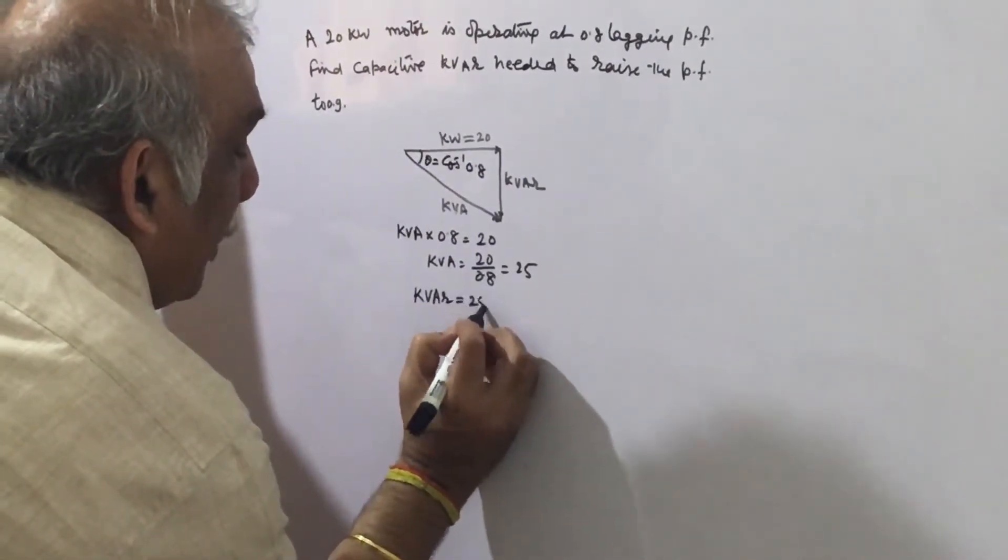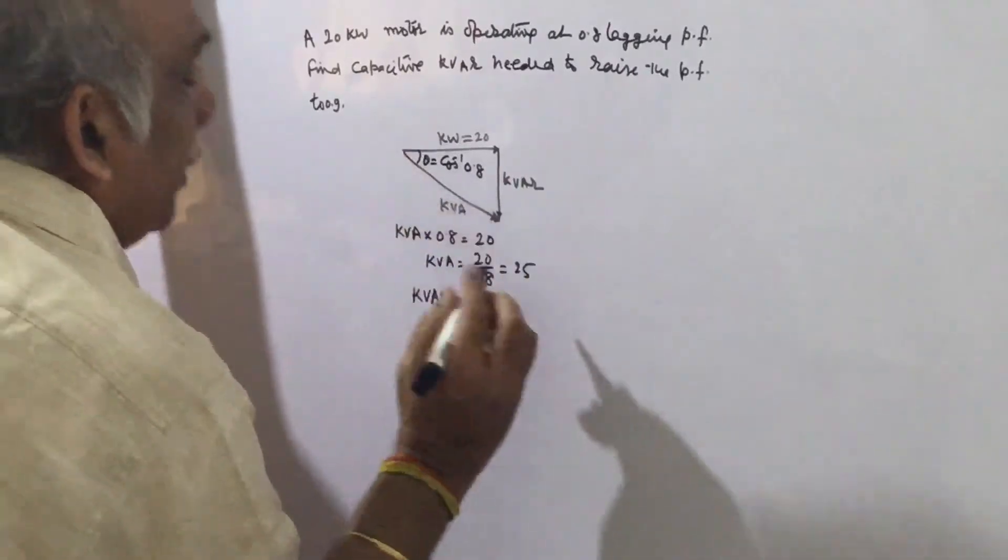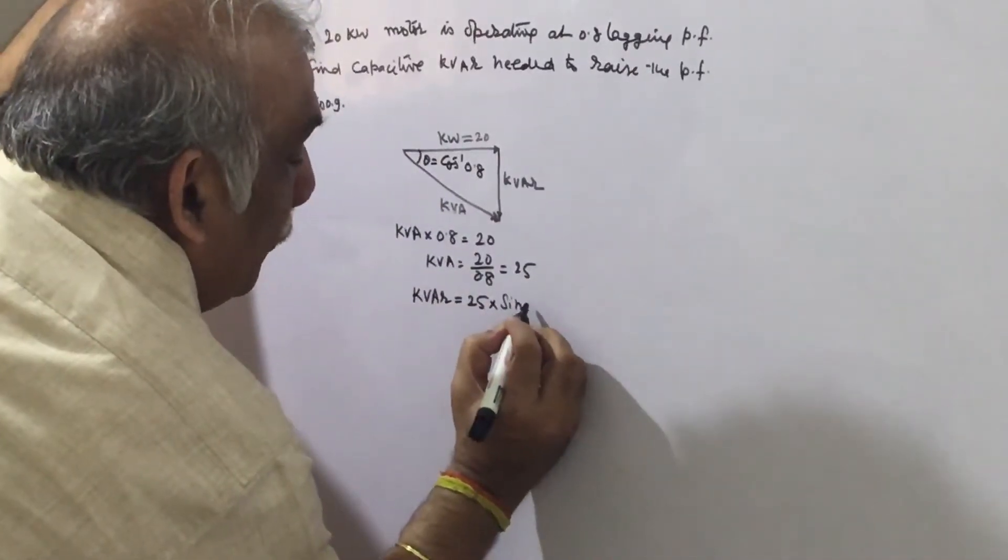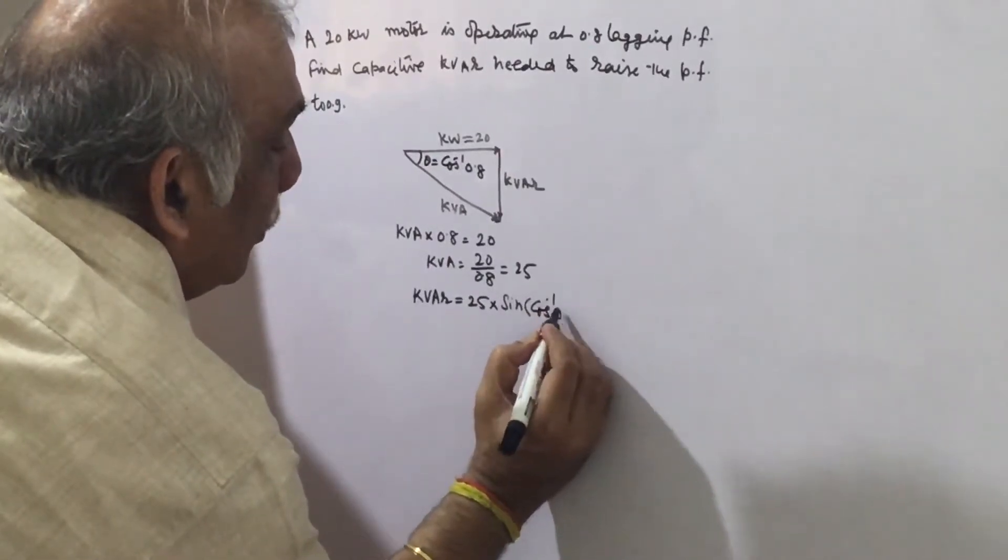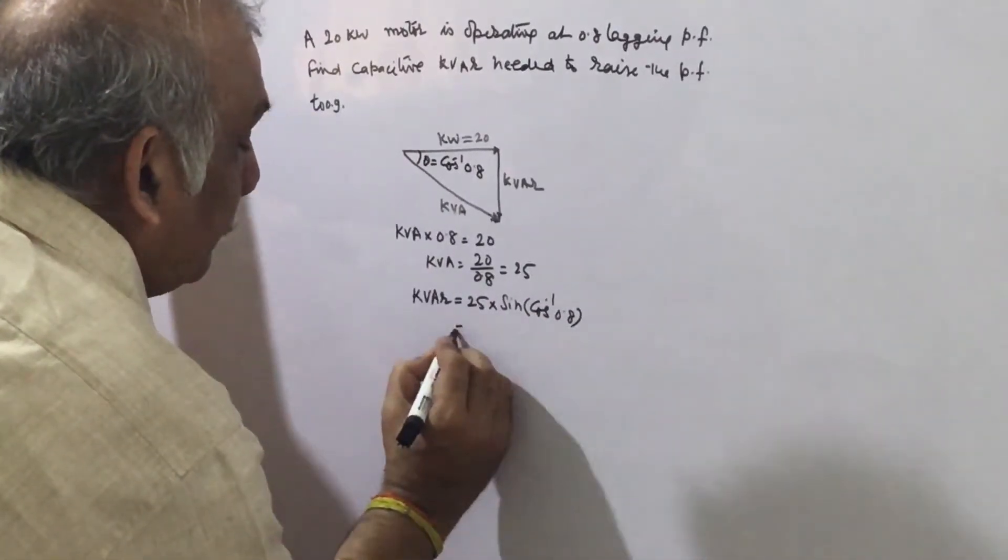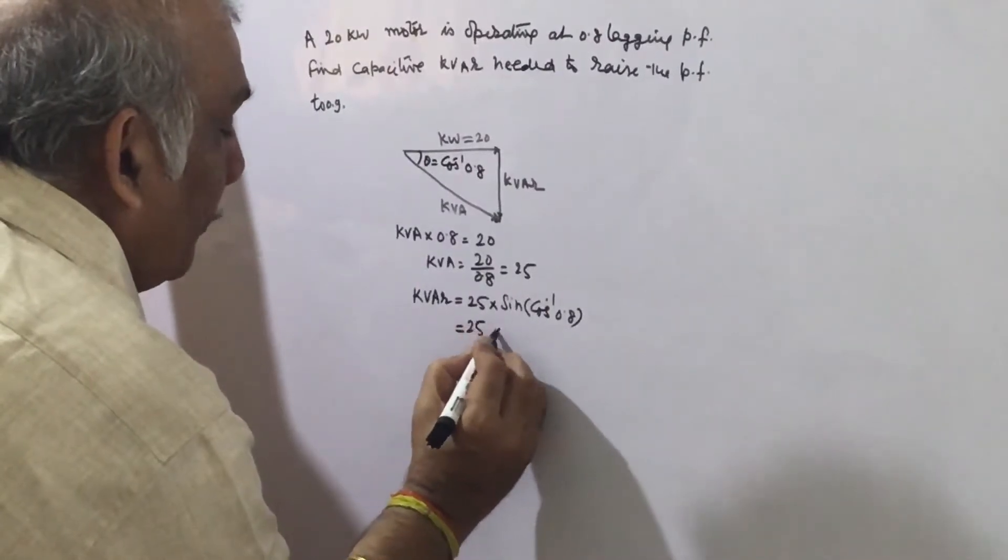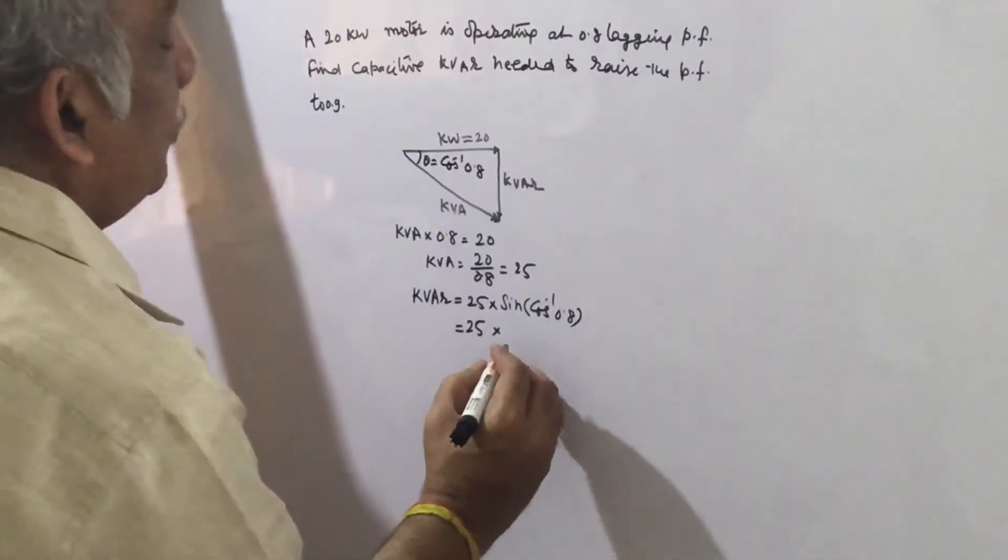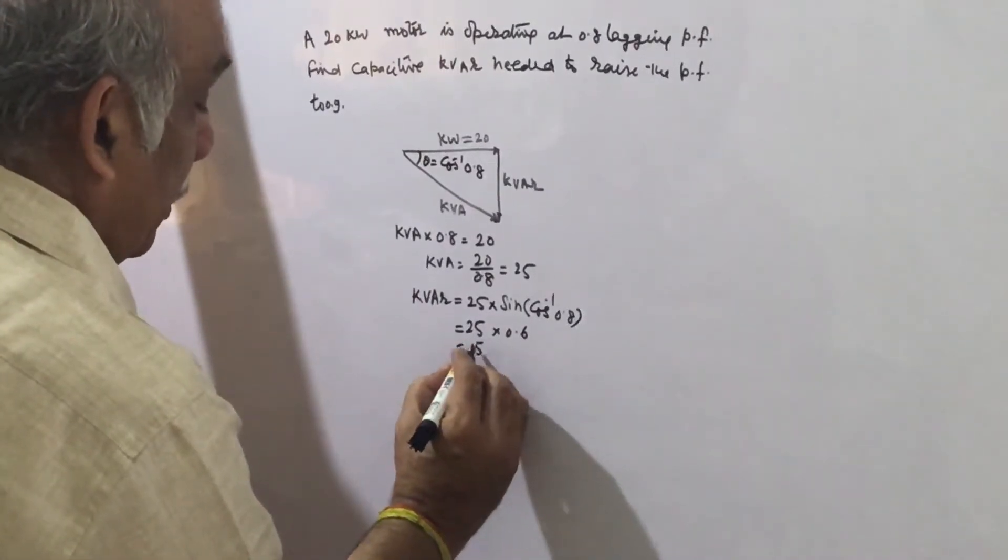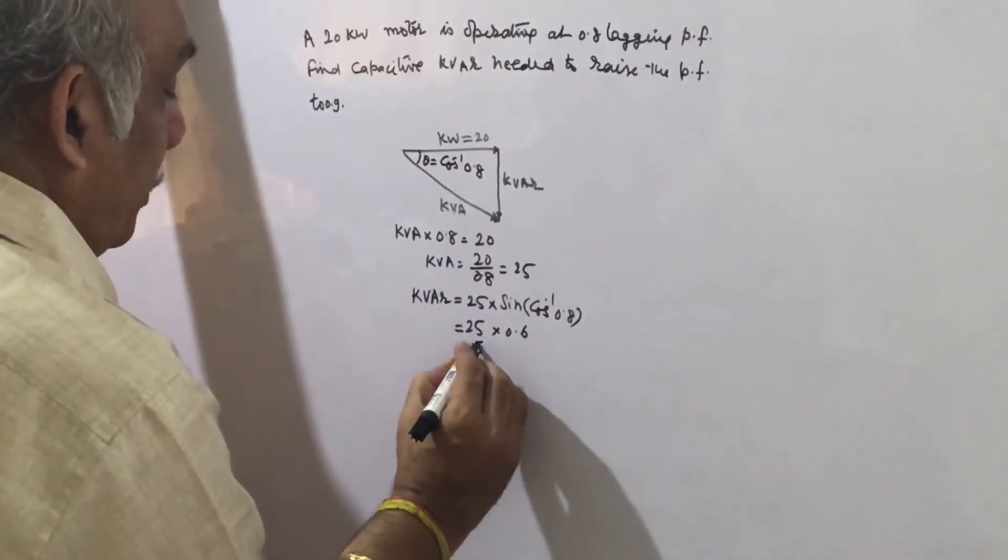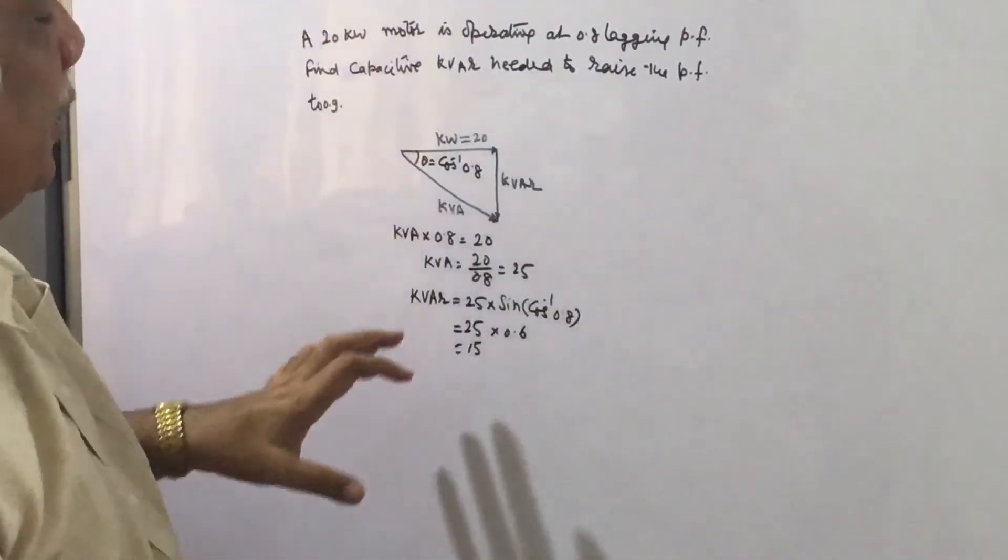And kVAR is equal to 25 times sine of this angle, that is sine of theta. Theta is cos inverse 0.8, so 25 times 0.6 gives us 15 kVAR. When the motor is operating at 0.8 power factor, it is drawing 15 kVAR.